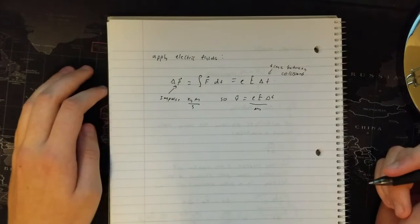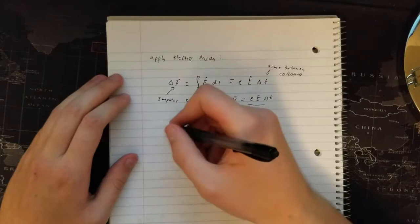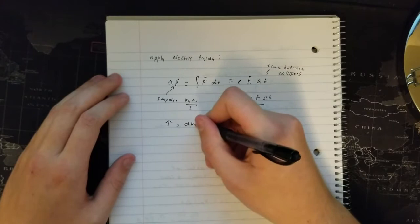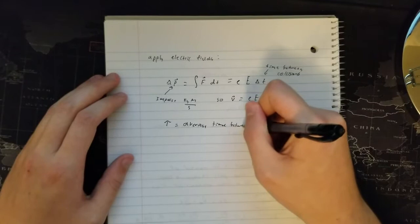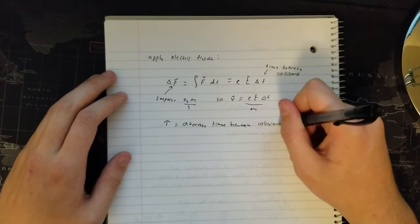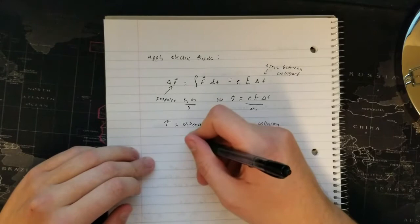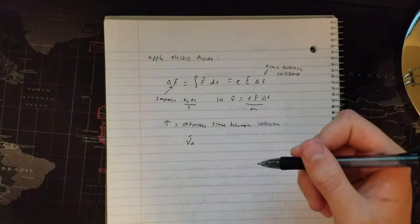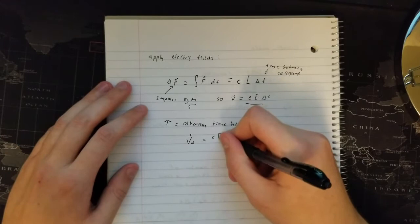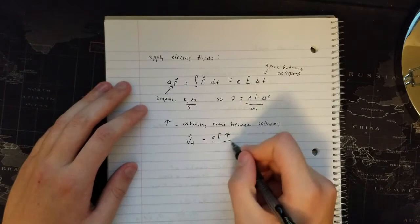Relating this back, we can set tau to be equal to the average time between collisions. The collisions are between the electrons and the ions. So applying this to the previous equations, the drift velocity V_D equals the charge times the electric field times tau, all over the mass.